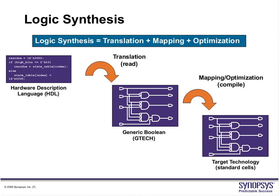Logic synthesis is divided into 3 parts. The first part is called translation, the second part is called mapping, and the last part is called optimization. Translation is the name given to the process of converting the HDL description into something called a GTECH netlist. GTECH is a term specific to Synopsis meaning generic Boolean. The Verilog code with if-else, case statements, always blocks and so on would be translated into this GTECH generic Boolean netlist.